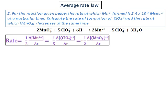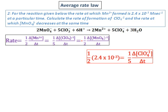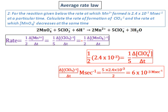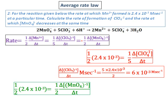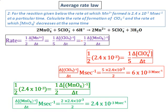The rate at which Mn²⁺ is formed is given. Substituting it into the equation, I can get the rate at which ClO₄⁻ is formed, which comes to 6 times 10 to the power of negative 3 molar per second. Similarly, compare the rate of MnO₄⁻ with Mn²⁺ or ClO₄⁻ and calculate the rate at which MnO₄⁻ decreases. The answer comes to 2.4 times 10 to the power of negative 3 M per second.